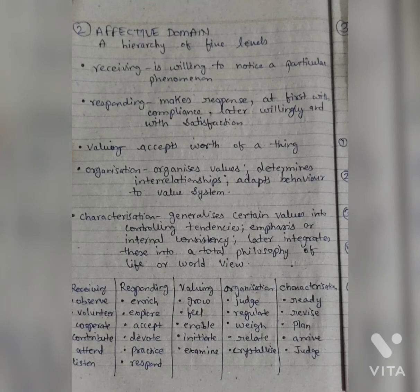Affective Domain — a hierarchy of five levels. Receiving: is willing to notice a particular phenomenon. Responding: makes a response, at first with compliance, later willingly and with satisfaction. Valuing: accepts the worth of a thing. Organization: organizes values, determines interrelationships, adopts behavior to a value system.